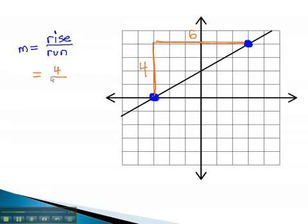This means we rise 4 and run 6, giving us the fraction 4 sixths. We can reduce that fraction by dividing by 2 to get our final slope of the line 2 thirds. This means for every 2 spaces the graph climbs, it will also run a distance of 3.